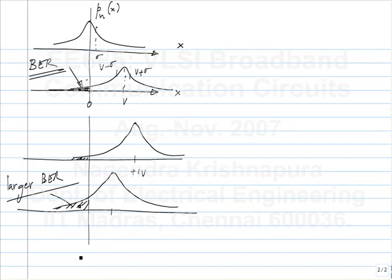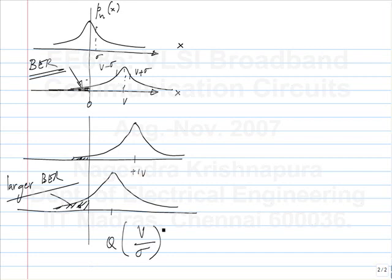The area here is 1 minus Q. The Q function is used to define the bit error rate - this area is the Q function of V over sigma. And what is the typical value of V over sigma? If I want 10 to the minus 12, what should V over sigma be? There is a simple approximation to this error function. I think 6 gives 10 to the minus 12, and 7 gives 10 to the minus 15 and so on. Regardless of the absolute value of the error, inter-symbol interference will increase the error rate.